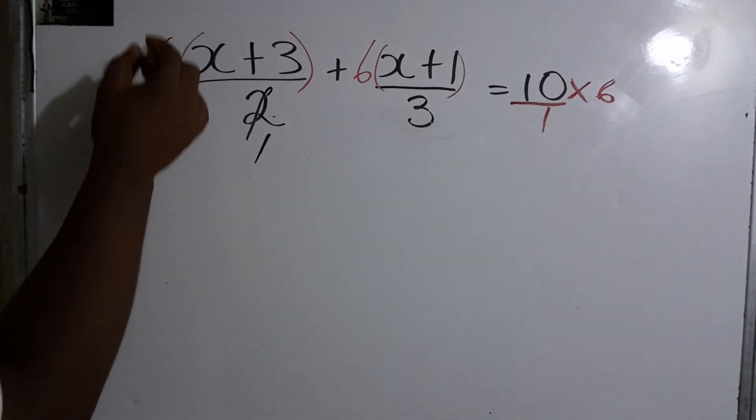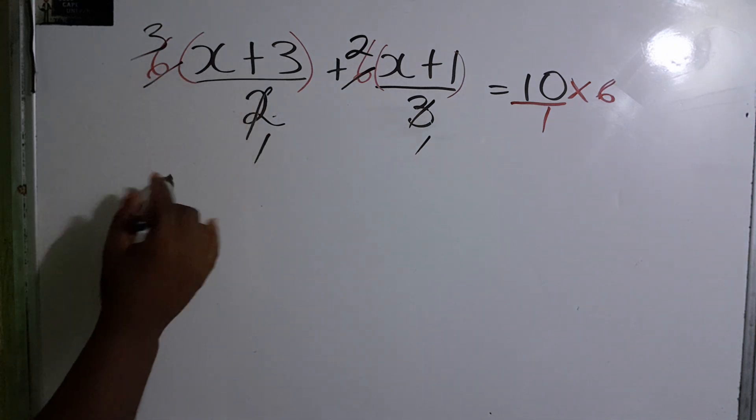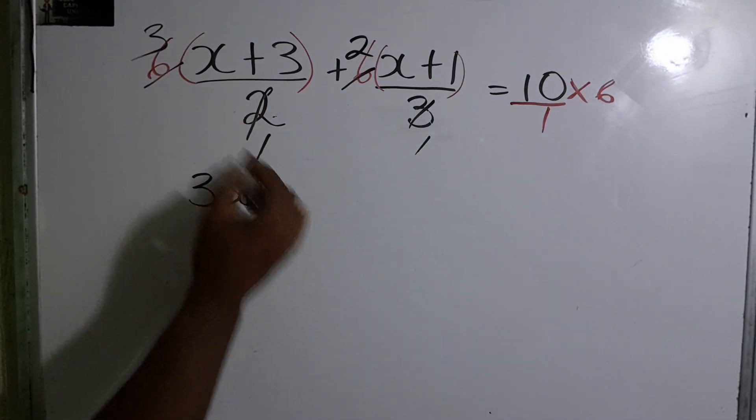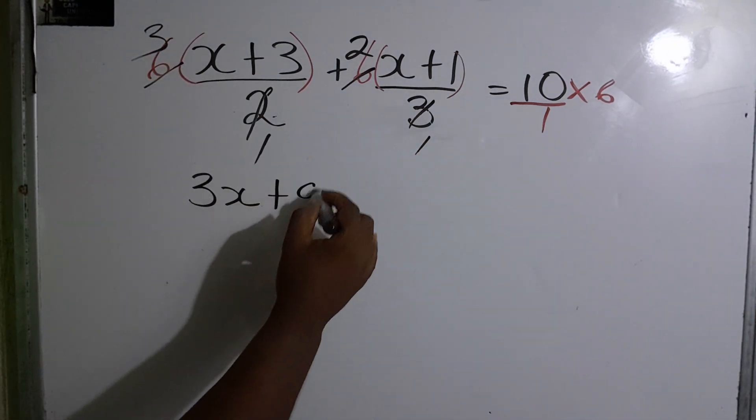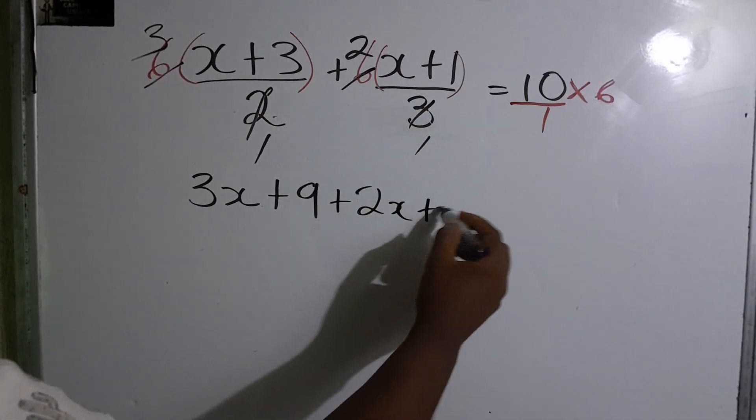Let's expand the bracket now. 2 into 2 is 1, 2 into 6 is 3, 3 into this 1, 3 into 6 is 2. So we now have 3 times x which is 3x, 3 times 3 is 9, 2 times x is 2x, 2 times 1 is 2.